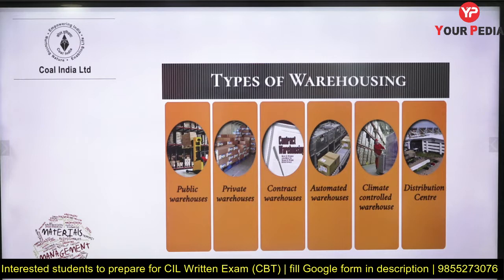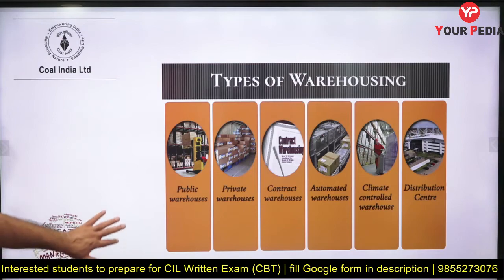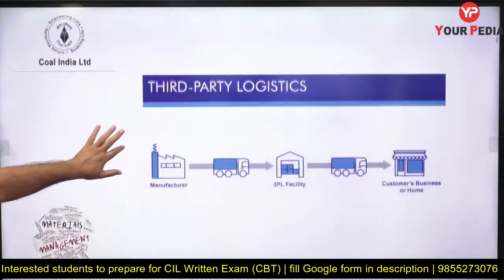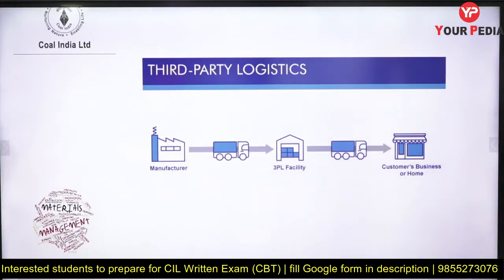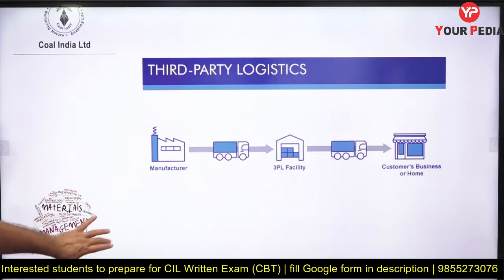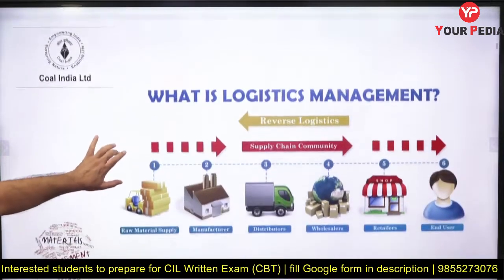Warehousing is a very important term — it is not only about physical storage but also includes data warehousing. Questions have been asked about the types of warehousing and how important it is as part of logistics. Warehousing is viewed alongside supply chain management. Third-party logistics is also important: whether to maintain your own logistics or outsource it to a third party — questions have come from there.